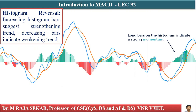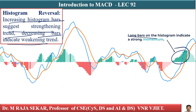Histogram reversal: increasing histogram bars suggest a strengthening trend, while decreasing bars indicate a weakening trend. Increasing, longer bars indicate strong momentum.